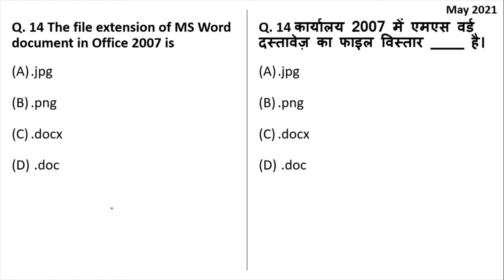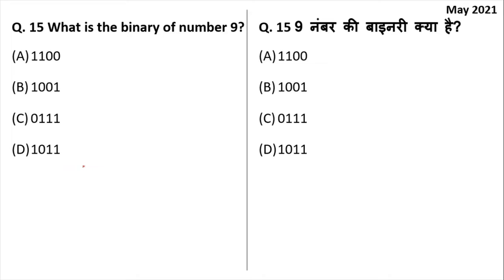The file extension of an MS Word document in Office 2007 is .docx — D-O-C-X. From MS Word 2007 or Office 2007 and above, .docx has been used. Before that, only .doc was used, but now .docx is the standard.